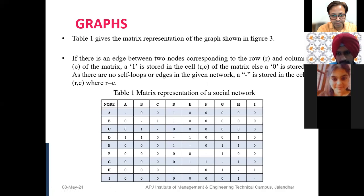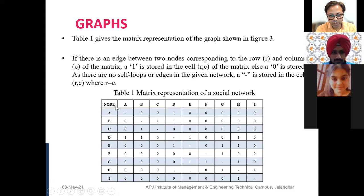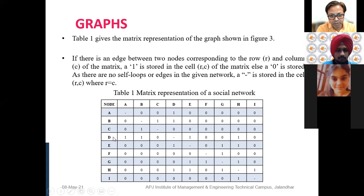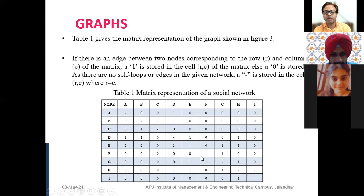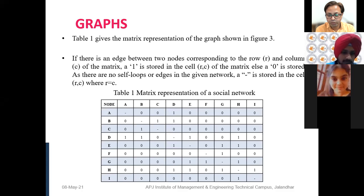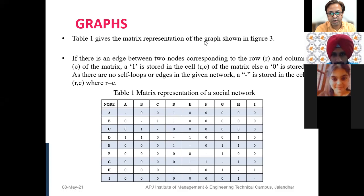Node D has four edges, so we will see four 1s in the row of D. If D is connected to itself there is a self-loop. In a graph with no self-loops, we can simply put a hyphen. If there is an edge between any two given nodes we put a 1; otherwise we put a 0. This makes understanding the graph easier for computers, which understand only zeros and ones. So for a software tool or programming language, the graph is input in this way — how many zeros and ones and between whom.